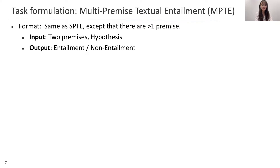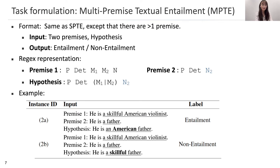The second task is MPTE. It has the same format as SPTE, except that now there are more than one premise, and the task is to determine if they collectively entail the hypothesis. In the regex representation, an example looks like this: Premise 1 is the prefix plus the whole NP. Premise 2 is the prefix, the determiner, plus a different noun called N2. And the hypothesis has the composition of M1 or M2 with M2. For example, Premise 1 could be 'he is a skillful American violinist,' and Premise 2 could be 'he is a father.' Suppose both are true — it's also true that 'he is an American father,' but not necessarily that 'he is a skillful father.' Intuitively, this task tests if a modifier can be freely decomposed from an NP and composed with another noun.